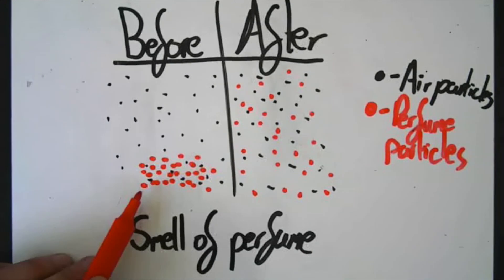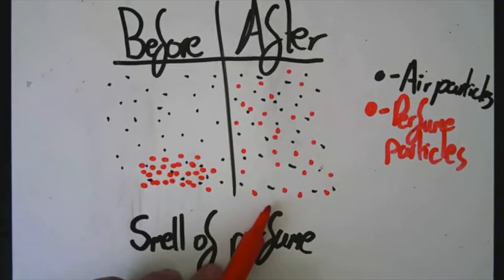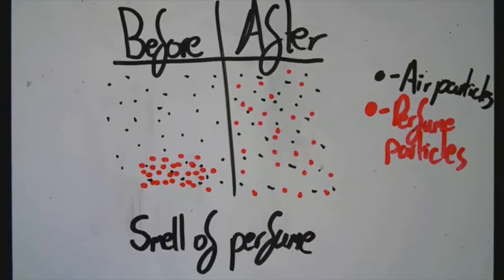So here we can see at the start, all of the particles are in a high concentration. And after a short period of time, all of the particles have spread out and they're now in a lower concentration.